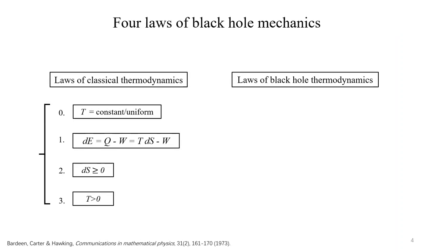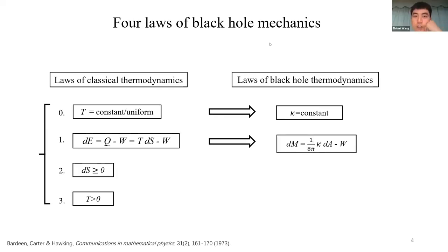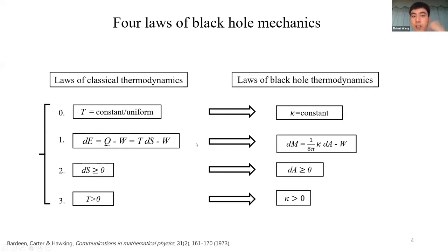Until Bardeen, Carter, and Hawking discovered the four laws of black hole thermodynamics, this was still an analogy. The four laws claim: you have a surface gravity which is constant for a stationary black hole, analogous to temperature; and you have a zeroth law, a first law, a second law, and a third law. But until then, it was just an analogy — the surface gravity may correspond to temperature, and the horizon area may relate to entropy.